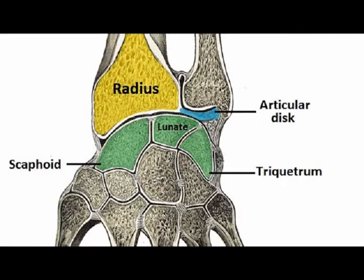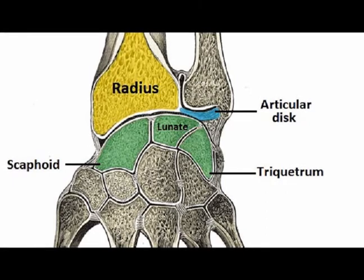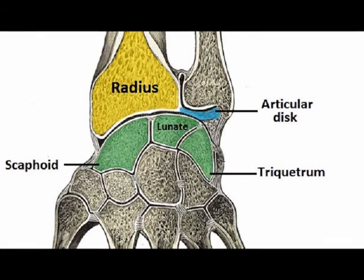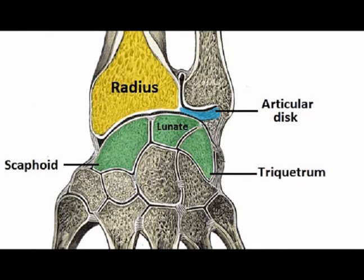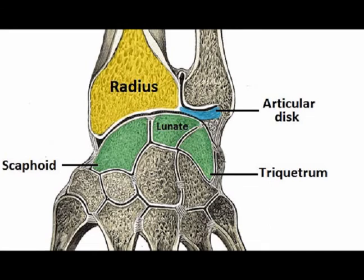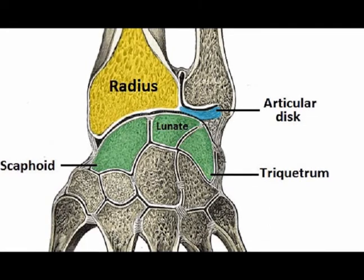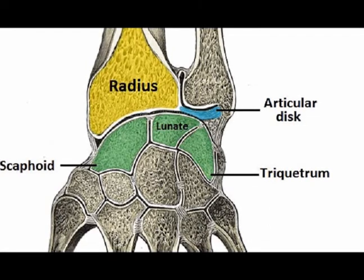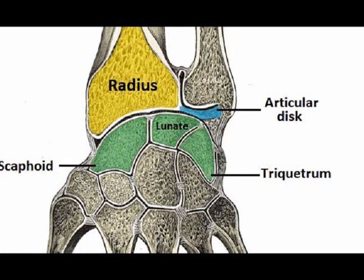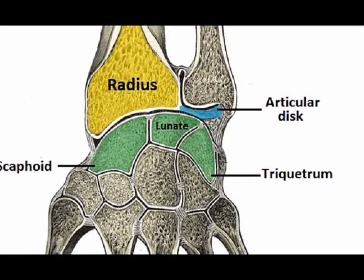In the wrist, the dominant stabilizing structure is the triangular fibrocartilage complex, often abbreviated to the TFCC. Located on the ulnar aspect of the wrist, the TFCC is composed of a triangular shaped articular disc of fibrocartilage, which parallels the articular surface of the ulnar carpal joint.